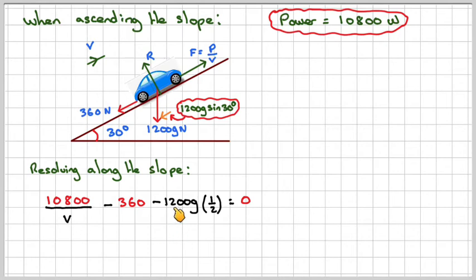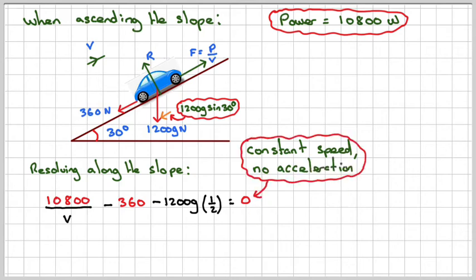So we need to do 1,200 G times the sine of 30, which you should know is a half, and that's equal to zero from the same reason we're at constant speed. That's the maximum speed, so there will be no acceleration.